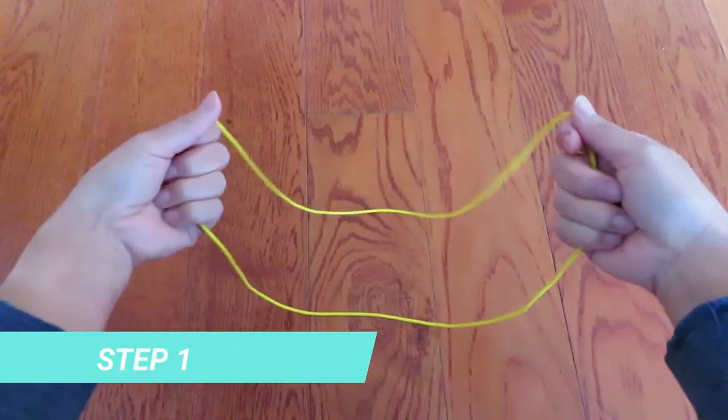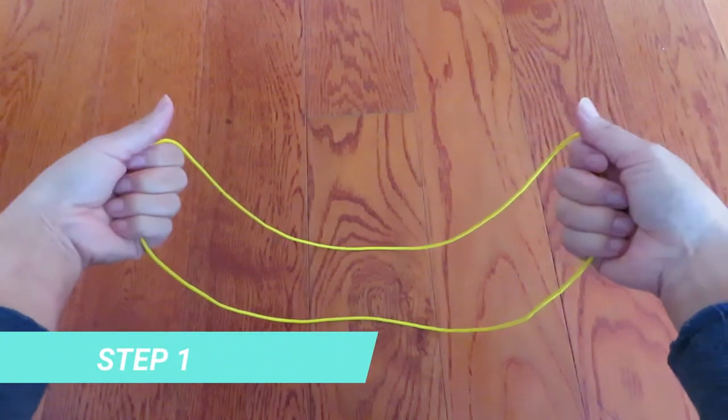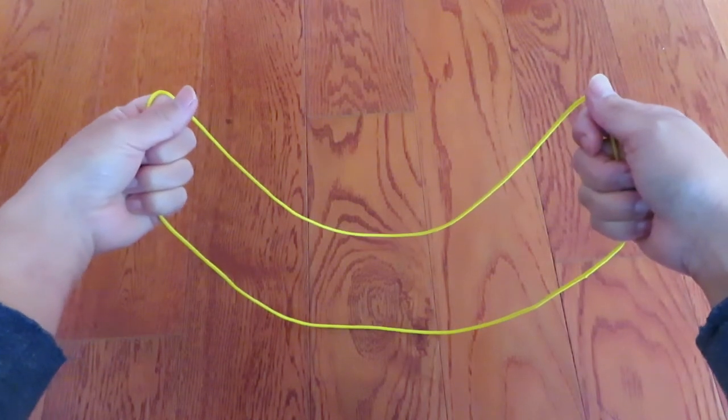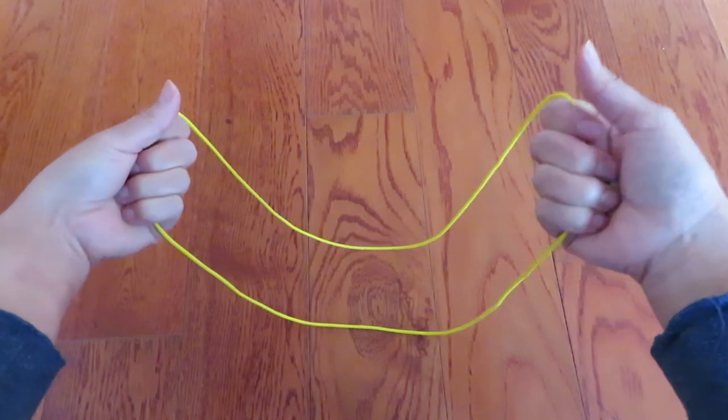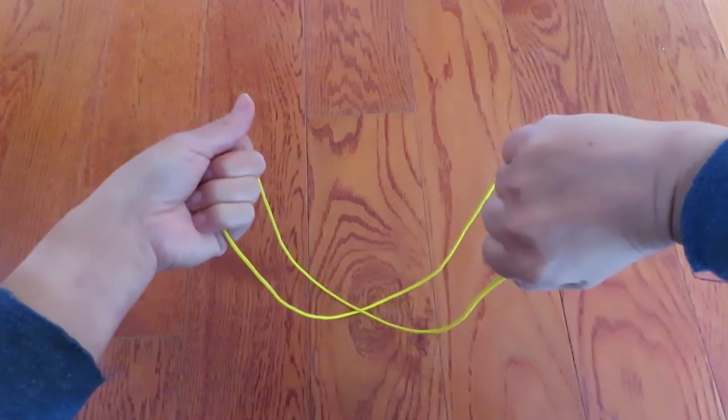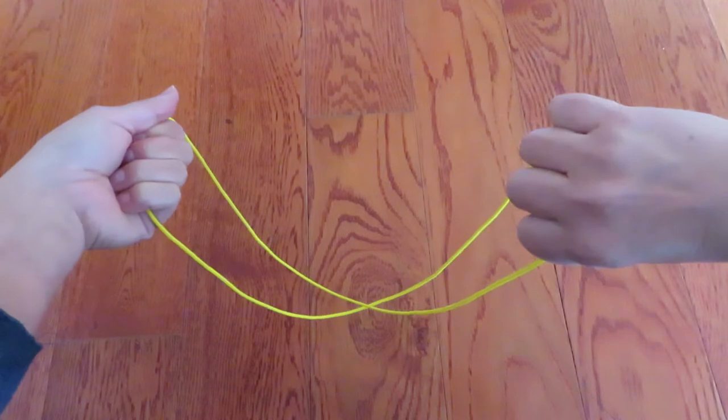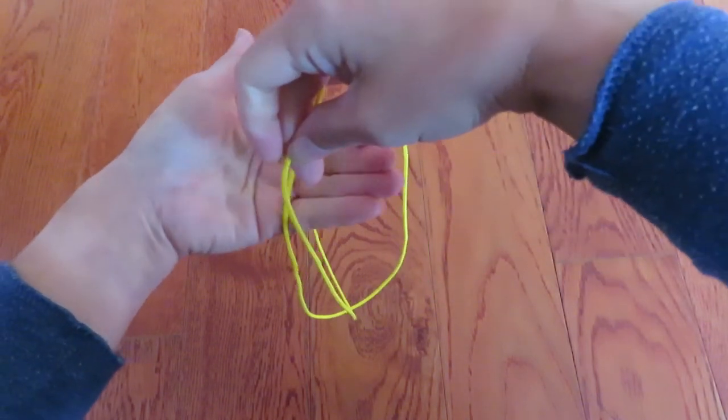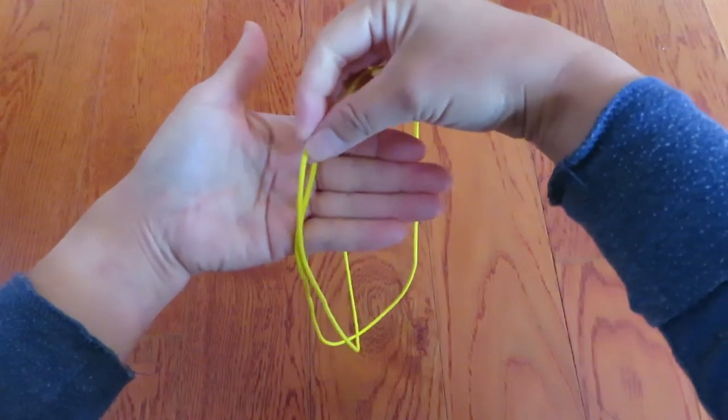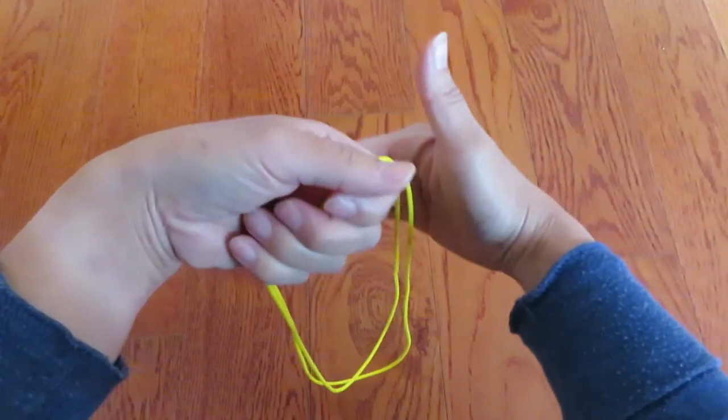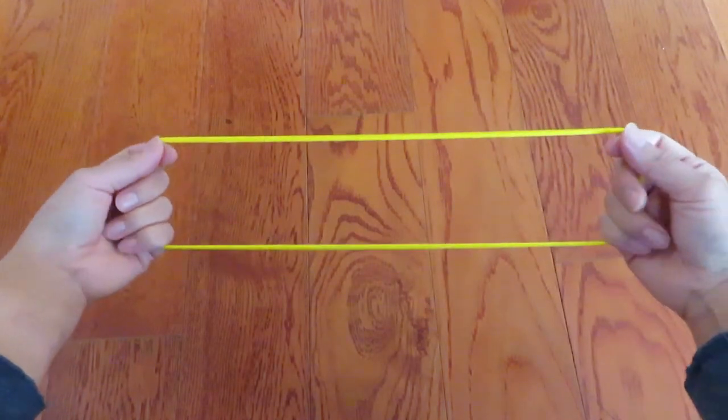First, with two hands, hold the string loop like this. Now, right hand, twist it so that you can see the back of the hand. Put these two hands together and give the string to that left hand like this. And it becomes a double loop.